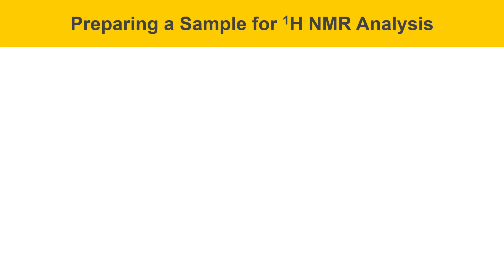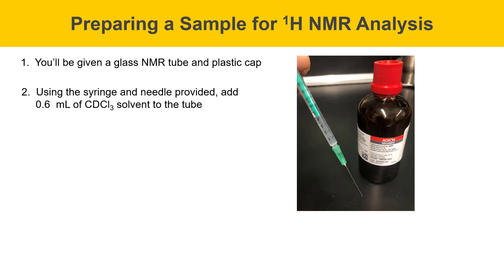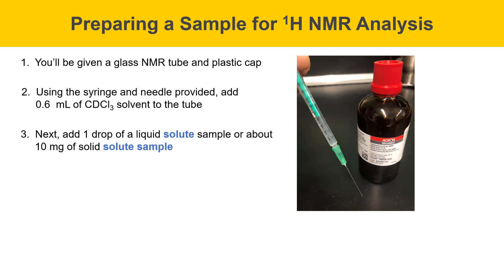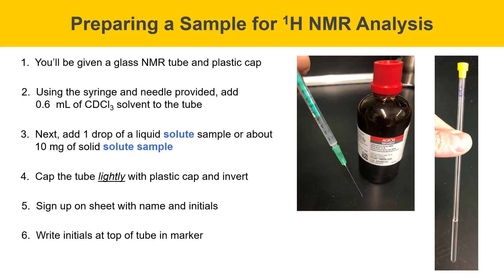Next, I'll talk about preparing a sample for proton NMR analysis. You'll be given a glass NMR tube with a plastic cap, and you'll use a syringe and needle to measure out 0.6 milliliters of CDCl3 solvent and add that to the NMR tube. Then add one drop of your unknown liquid solute sample, or about 10 milligrams if you have a solid. With solid samples, it may be easier to dissolve the solid in a test tube with the NMR solvent first, then pipette the solution into the NMR tube. Cap the tube lightly, invert it a few times to mix, sign up on the sign-up sheet, write your initials on the NMR tube in Sharpie marker, and the NMR data will be acquired and emailed to you.